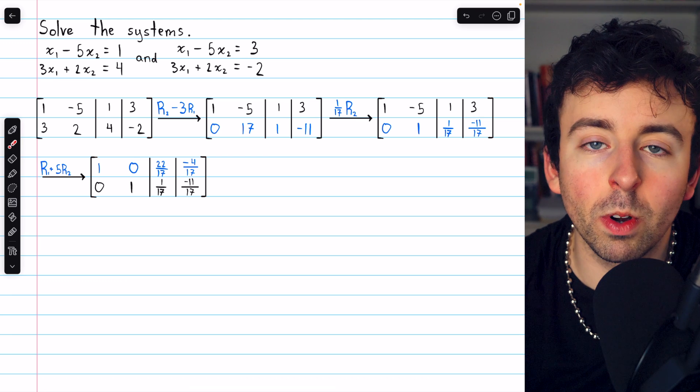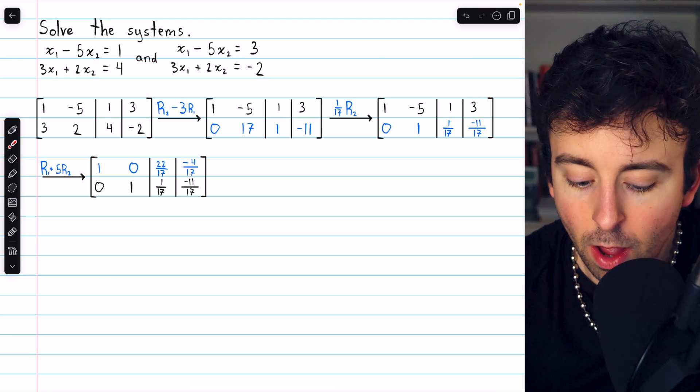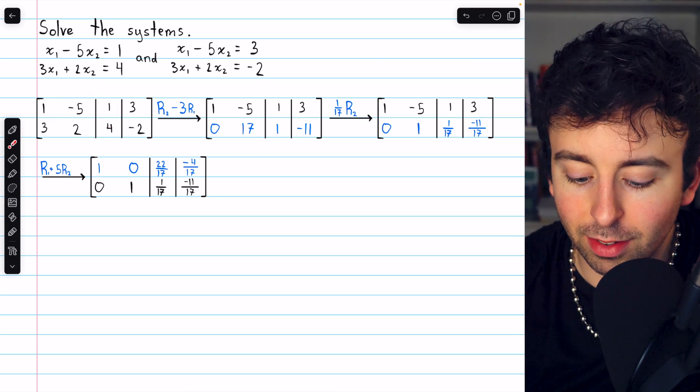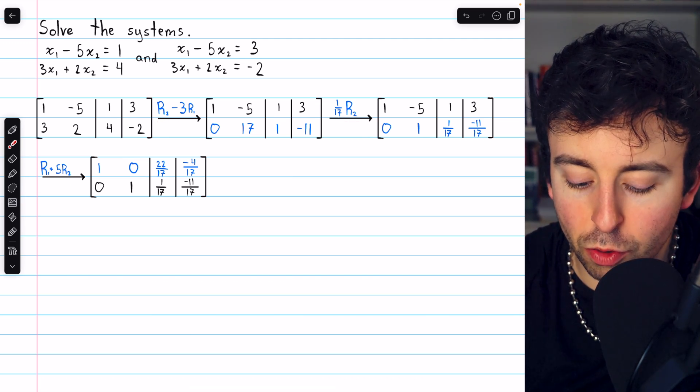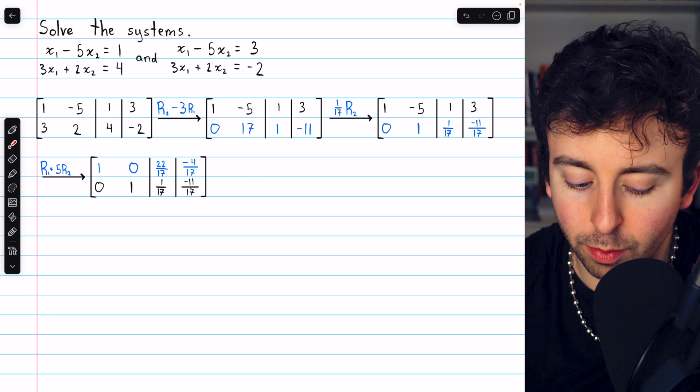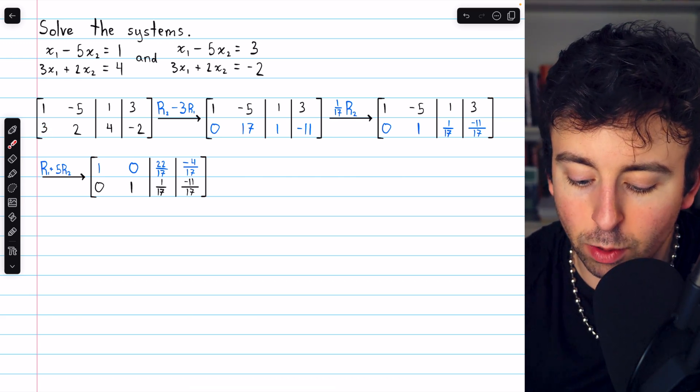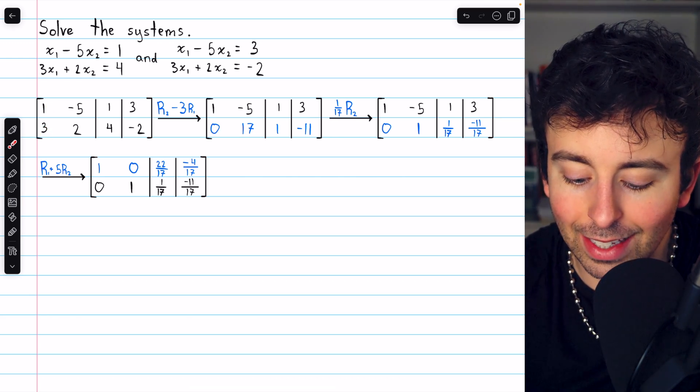By performing Gauss-Jordan elimination or Gaussian elimination on this matrix, we can solve both systems at the same time. Here are the steps we would take. We change row 2 by subtracting three copies of row 1. In that way, we introduce a 0 below that leading 1.